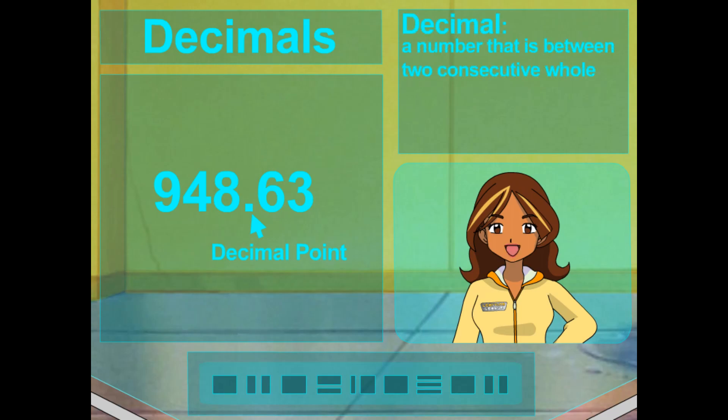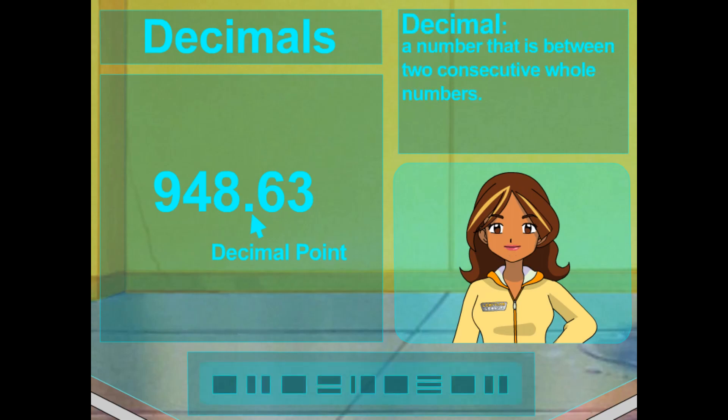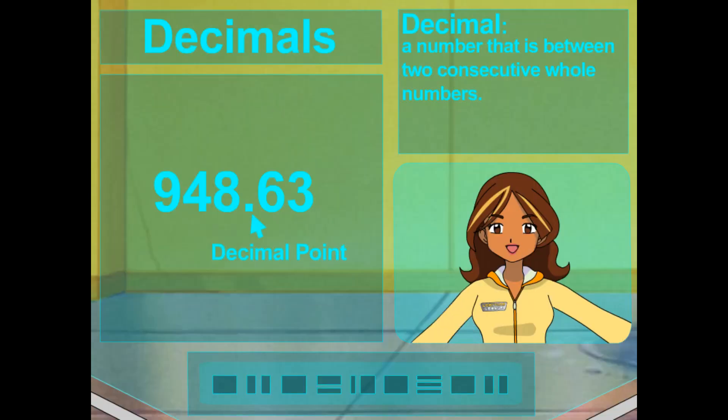A decimal is a number that is between two consecutive whole numbers. Like a slice of pizza is part of a whole pizza. That's exactly what it's like. It tells the fraction with a dot. So that dot means it's between two numbers. But which ones? The ones it's between.